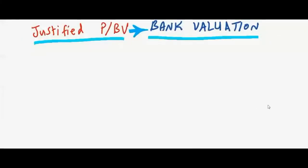Hello everyone, welcome back to one of our episodes about fundamental analysis. Today we will talk about justified price-to-book value. This is one of the ways to value banks in the stock market. We've talked before about the justified price-to-earnings ratio, which is valuation for non-financial firms like manufacturers and service providers. Today we will do the same for banks — justified price-to-book value.